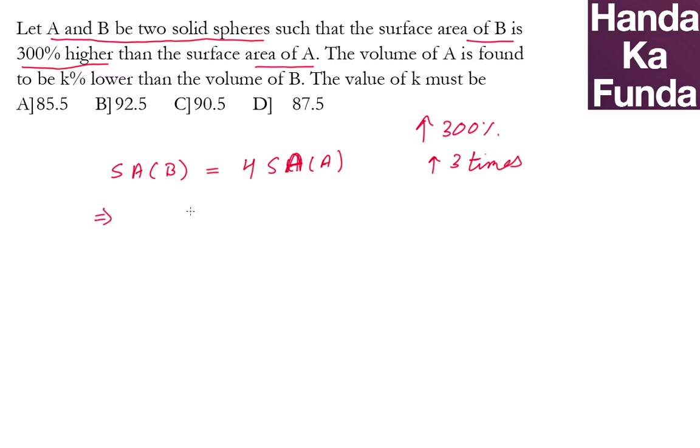Let's say the radius for the bigger sphere is capital R and for the smaller sphere is small r. That means the surface area for the big sphere will be 4πR². Surface area for the small sphere will be 4πr².